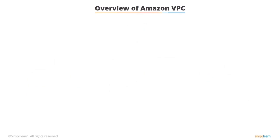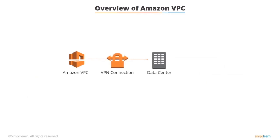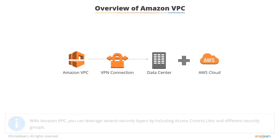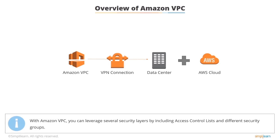You can also connect the Amazon VPC to your data center by establishing a virtual private network or VPN connection. This helps in rendering the AWS cloud as an extension of your data center.